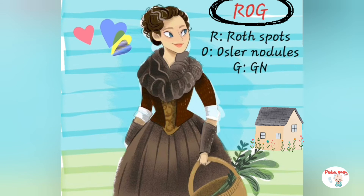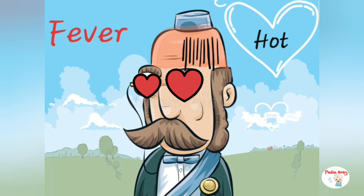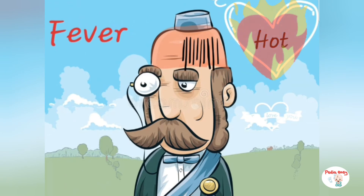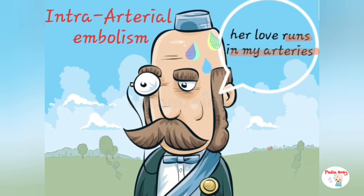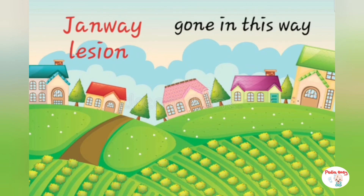The girl named Raj reminds us of immunological phenomena — R for Roth spots, O for Osler nodules, J for glomerulonephritis. The Duke's hot love reminds us of fever ≥38°C. His red eyes remind us of conjunctival hemorrhage. His phrase about arteries reminds us of intra-arterial embolism. His disappearance reminds us of Janeway lesions. These — conjunctival hemorrhage, intra-arterial embolism, and Janeway lesions — are all vascular phenomena but considered minor criteria.